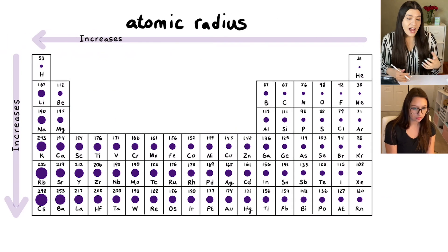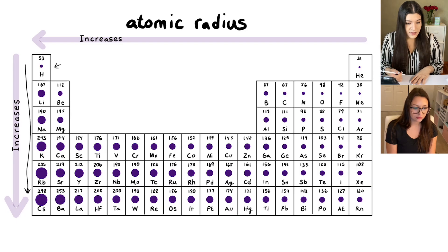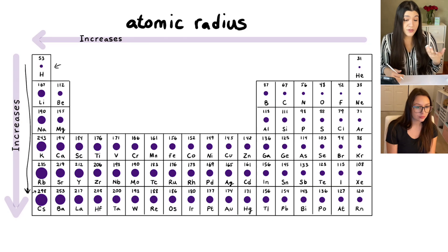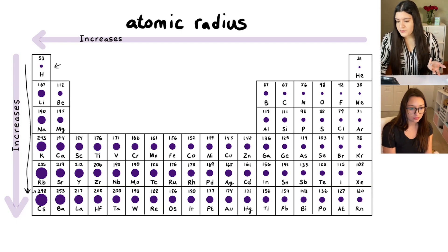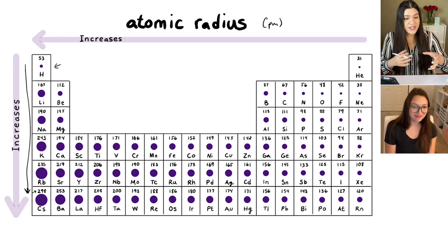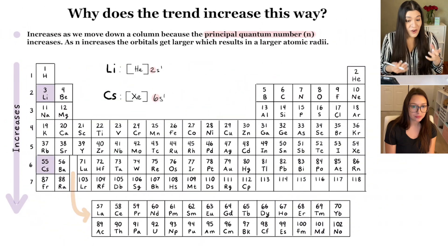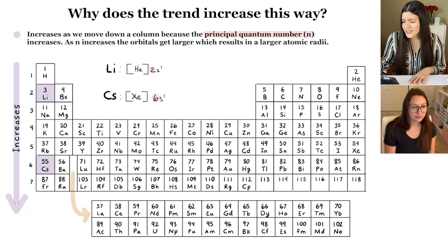This breakdown shows you the actual size of atoms. Starting with hydrogen, which is tiny, as we move down the column the size increases, all the way down to cesium. The numbers shown are not atomic numbers — they're the atomic radius in picometers. You don't necessarily need to memorize the exact picometer values, but seeing the sizes gives you a good visual of how the trend actually works.